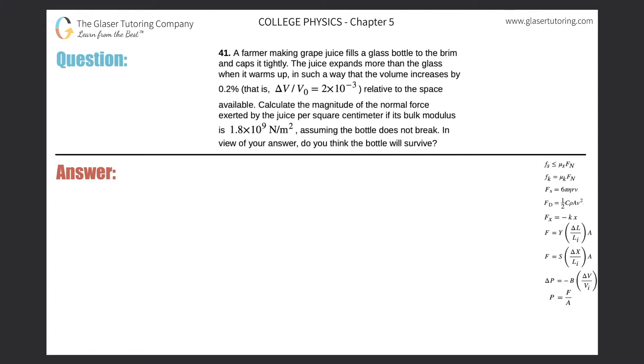Number 41. A farmer making grape juice fills a glass bottle to the brim and caps it tightly. The juice expands more than the glass when it warms up in such a way that the volume increases by 0.2%, that is, delta V divided by the initial volume is 2 times 10 to the minus 3, relative to the space available. Calculate the magnitude of the normal force exerted by the juice per square centimeter if its bulk modulus is 1.8 times 10 to the 9 newtons per meter squared, assuming the bottle doesn't break. In view of your answer, do you think the bottle will survive?